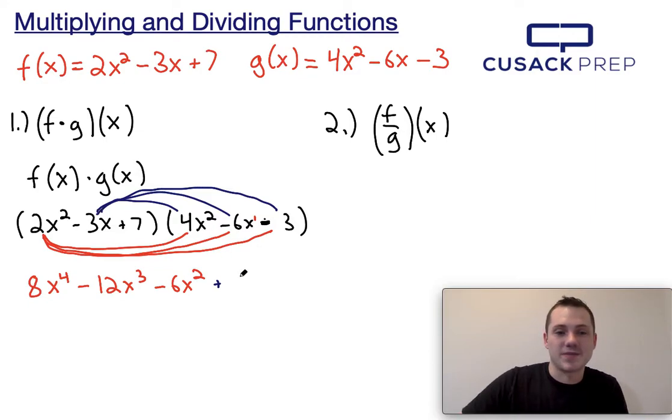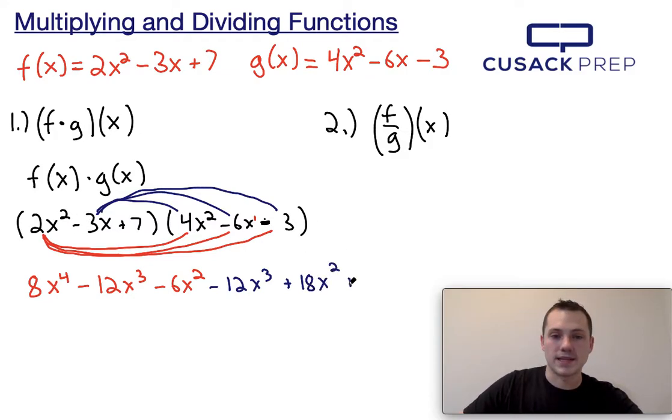So negative 3x times 4x squared is going to be minus 12x to the third. If I do negative 3x times negative 6x, well that's going to be plus 18x squared. And if I do negative 3x times negative 3, well that's going to be plus 9x.